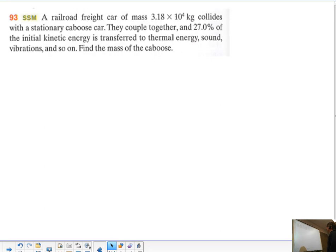This is inelastic, and it's a little bit of a twist because they don't give you the mass of the caboose, which is the train at the end. So you're going to make a momentum equation, solve for the velocity, and then you're going to use this piece of information here. 27% of the initial kinetic energy is transferred to thermal energy. So that means you're going to use P before equals P after to get the final velocity in terms of the initial velocity. And you're going to have the mass of the caboose in there as a variable.